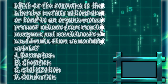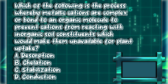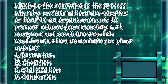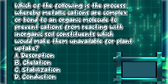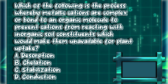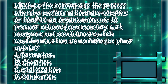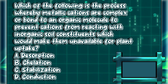Which of the following is the process whereby metallic cations are complexed or bonded to an organic molecule to prevent cations from reacting with inorganic soil constituents, which would make them unavailable for plant uptake? A. Desorption. B. Chelation. C. Stabilization. D. Conduction. The answer is letter B.